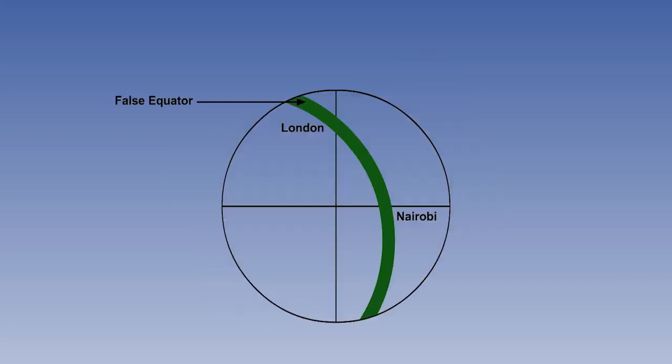This new great circle of tangency, which is often referred to as the false equator, has correct scale all along its length, and is within 1% out to 480 nautical miles either side of the centre line.